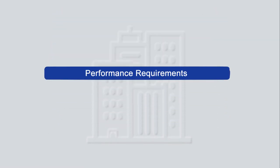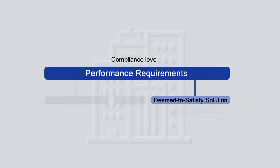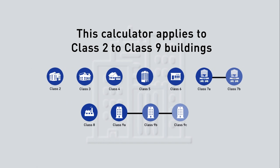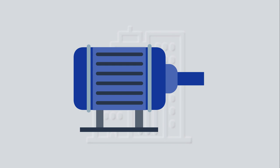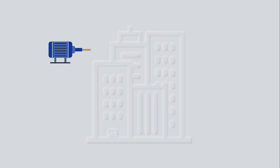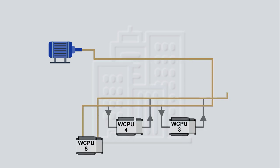The NCC is a performance-based code requiring all new buildings to meet minimum performance requirements. A deemed-to-satisfy approach is the optional pathway for achieving compliance used by this calculator, which applies to Class 2 to Class 9 buildings. This tutorial demonstrates using the Pump System Calculator to assist verifying compliance of a building's heating, cooling and/or ventilation design with the NCC.